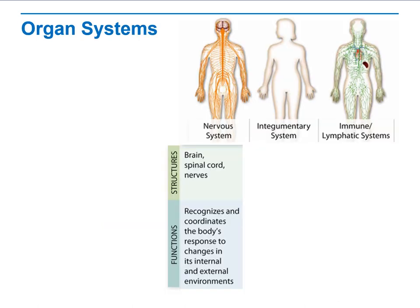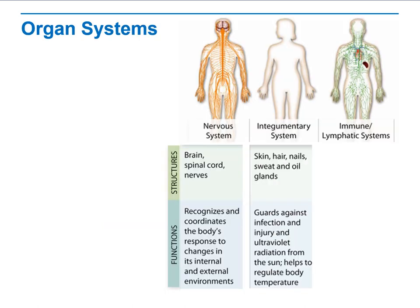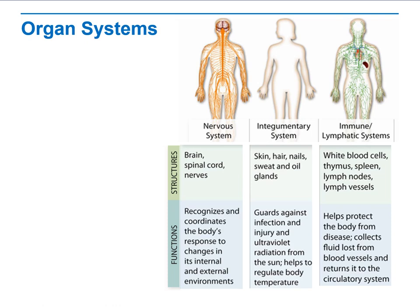Organ systems. We have different types of organ systems with different structures and functions. For example, the nervous system consists of the brain, spinal cord, and nerves. The main function is to recognize and coordinate the body's response to changes in the internal and external environment.